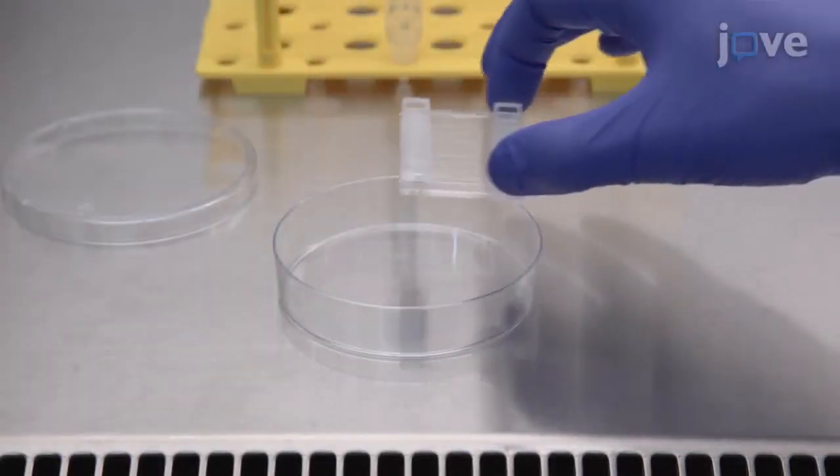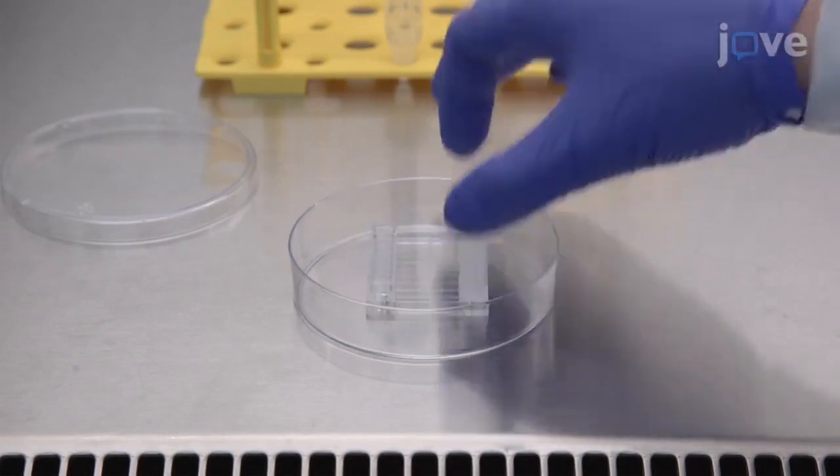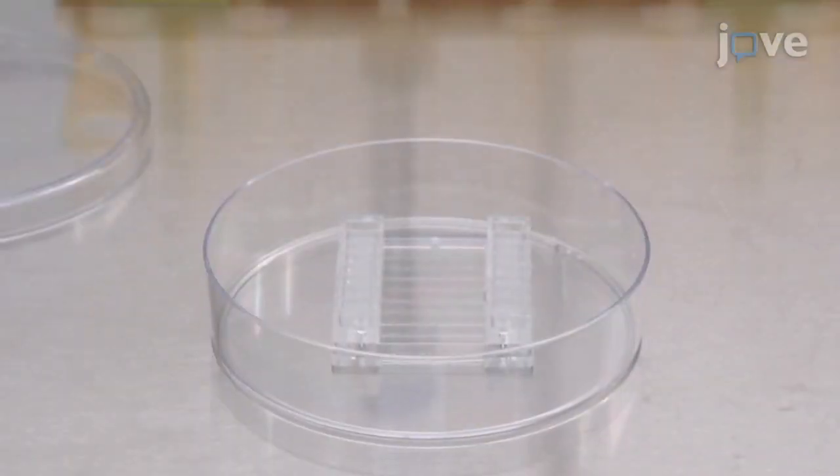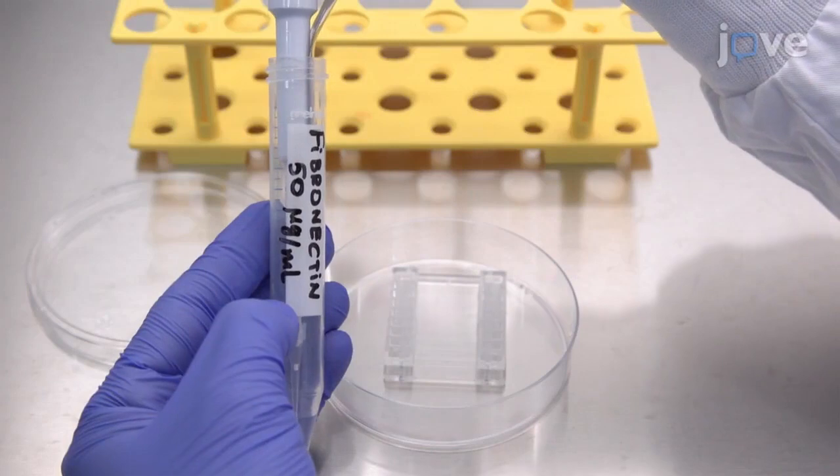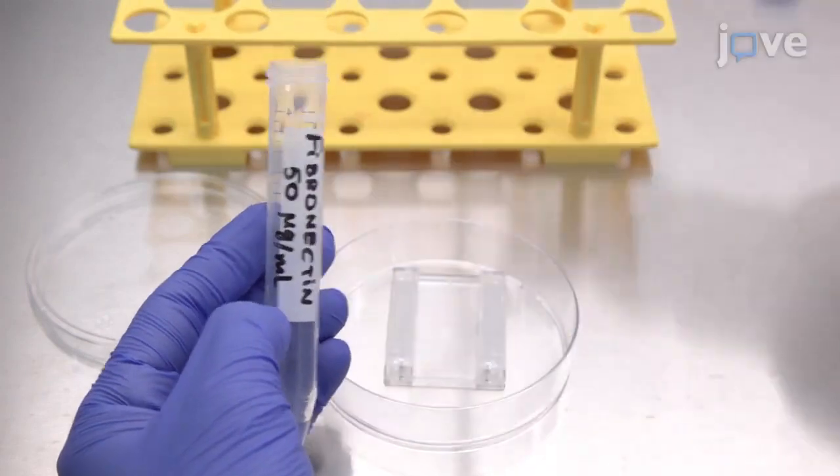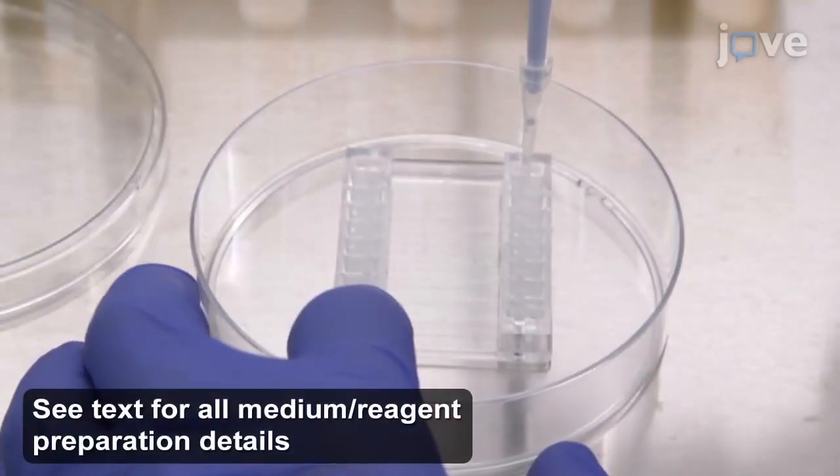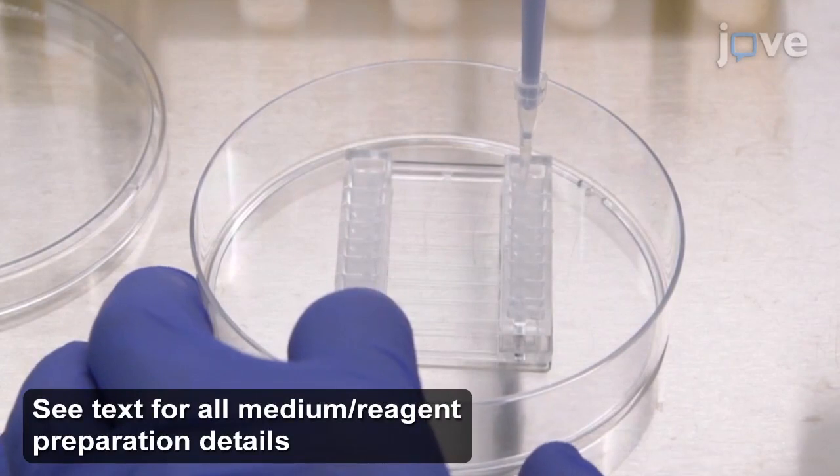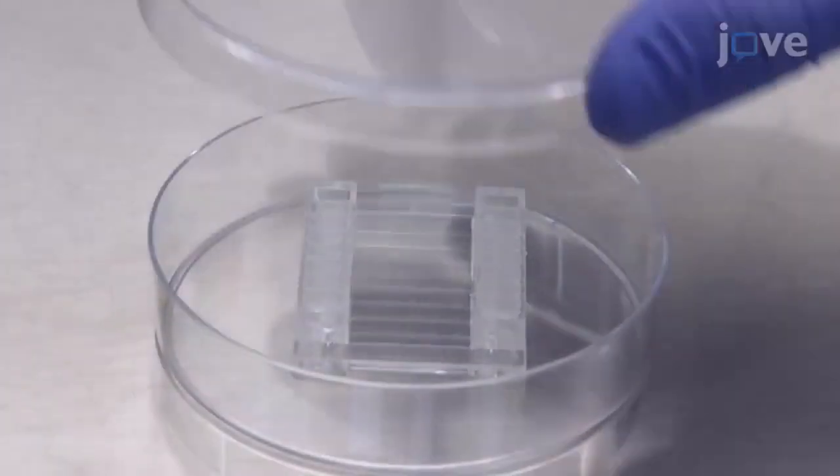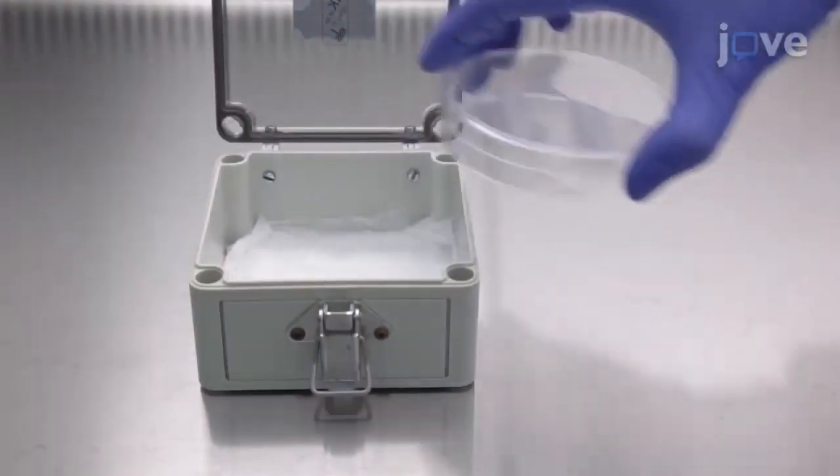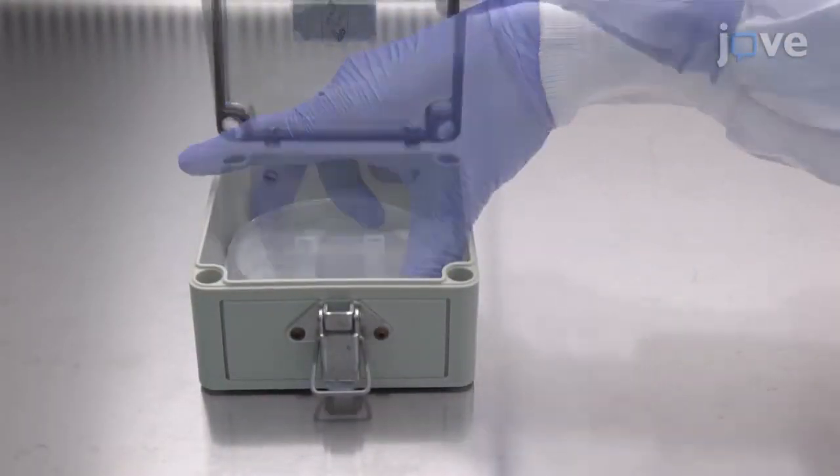For microfluidic chip coating, place a sterile biochip in a 10 cm sterile petri dish and use a 10 µL pipette tip to inject 10 µL of freshly prepared fibronectin working solution into each channel of the biochip. Cover the petri dish and place it in a humidified chamber overnight at 4°C.